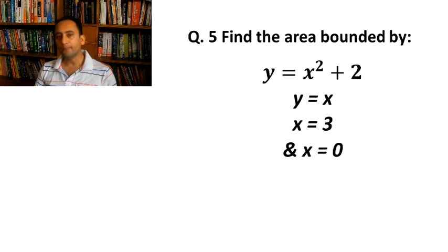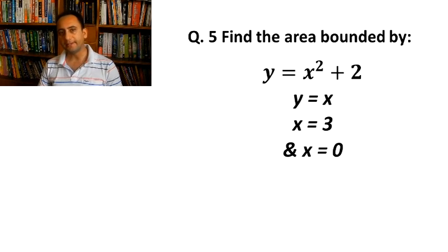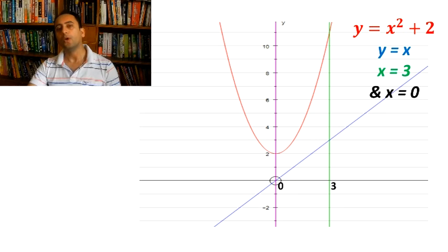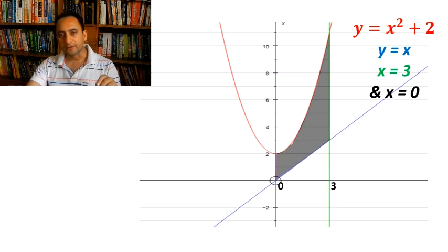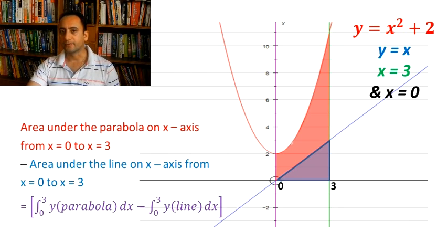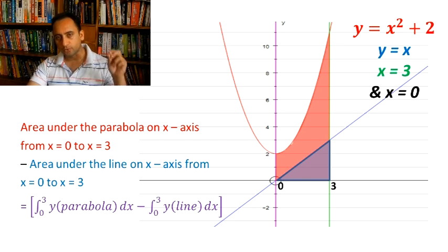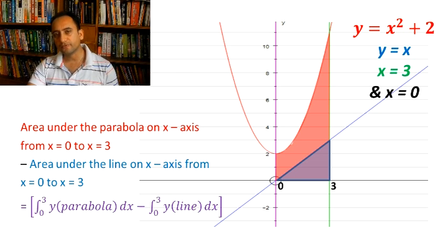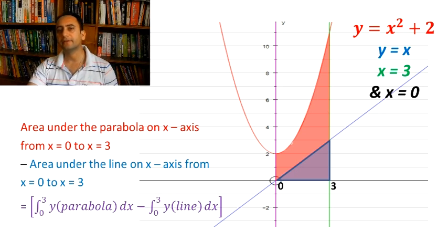Before plotting the graph, let us find the point at which the first and third equations intersect. The point of intersection of the first and third equation is (3, 11). Let's plot the graphs of all these functions. We need to find the area of the shaded region, which is area under the parabola from x = 0 to 3 minus area under the line from x = 0 to 3. So we compute the integral from 0 to 3 of y_parabola dx minus the integral from 0 to 3 of y_line dx, substituting y values from the given equations — a straightforward definite integral.